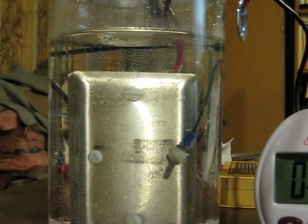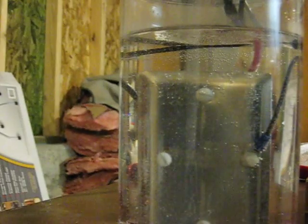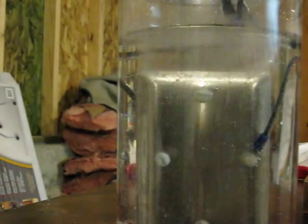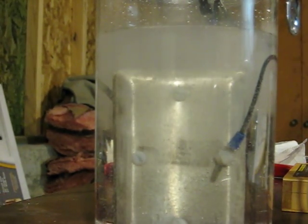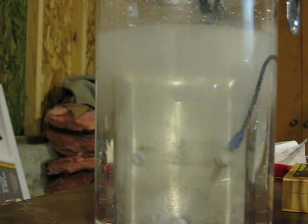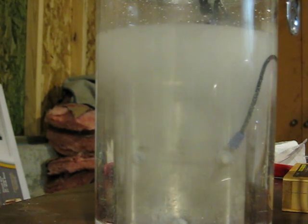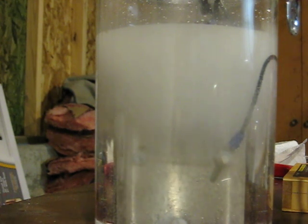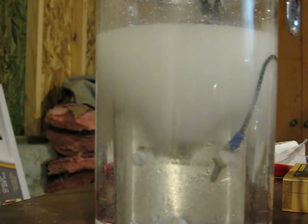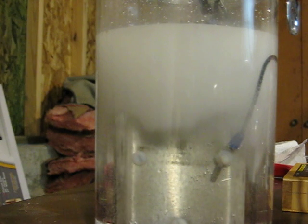This is the result. As you can see, the cell is producing hydrogen and the little tiny bubbles are circulating back down from the surface. They go to the top and then circulate back down, creating a white cloud of hydrogen bubbles in solution.